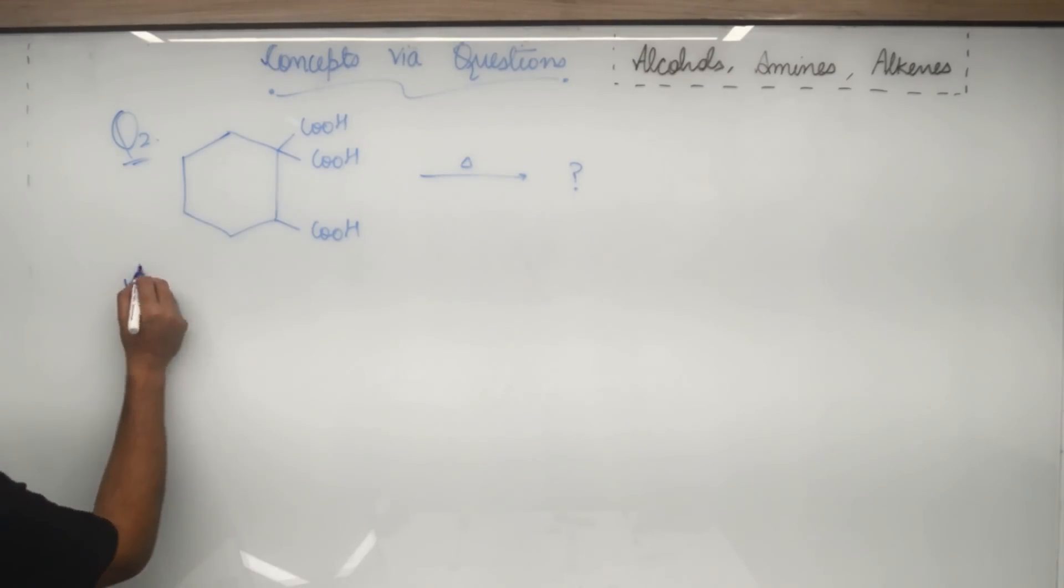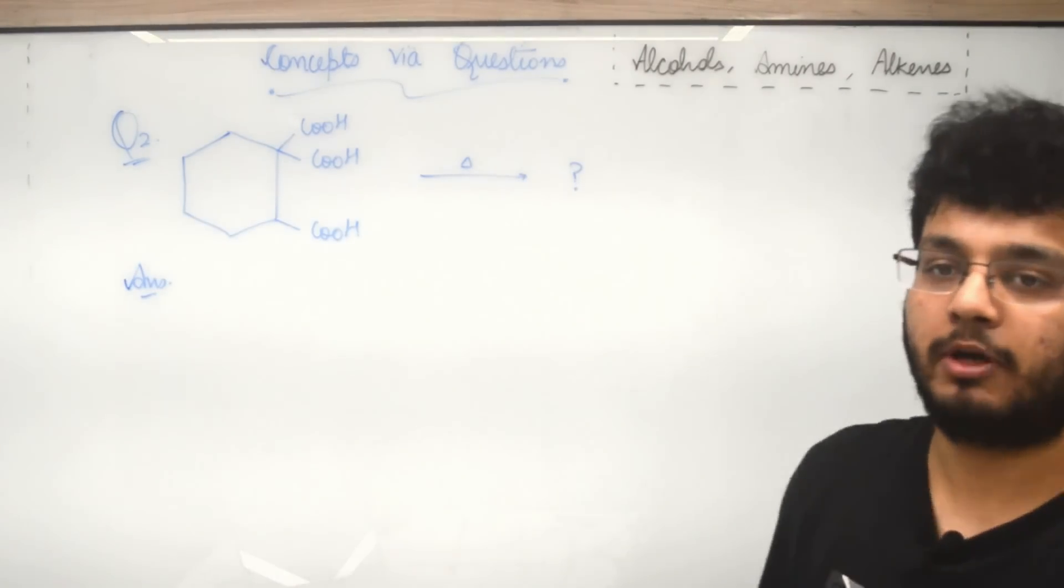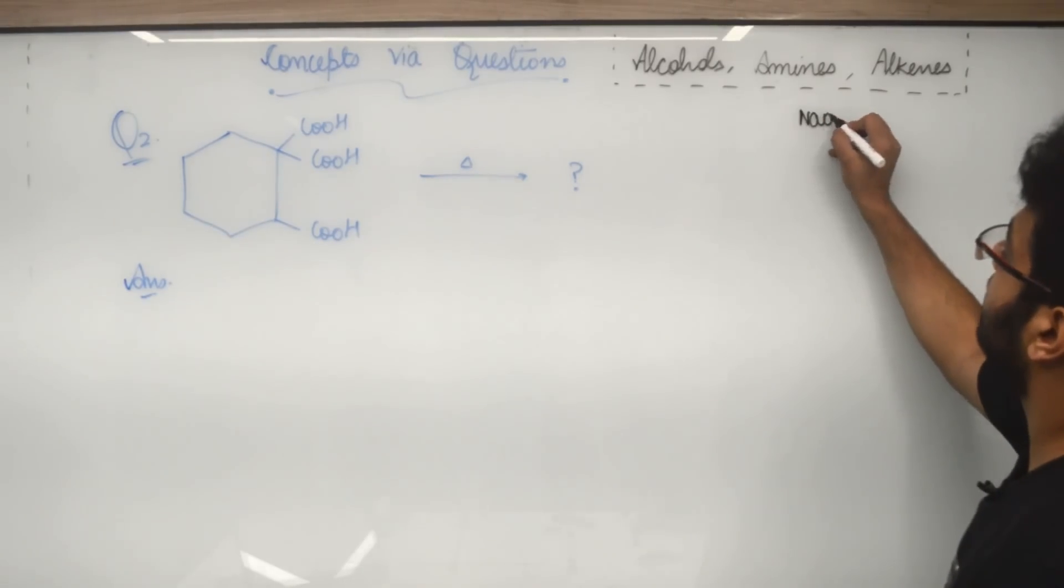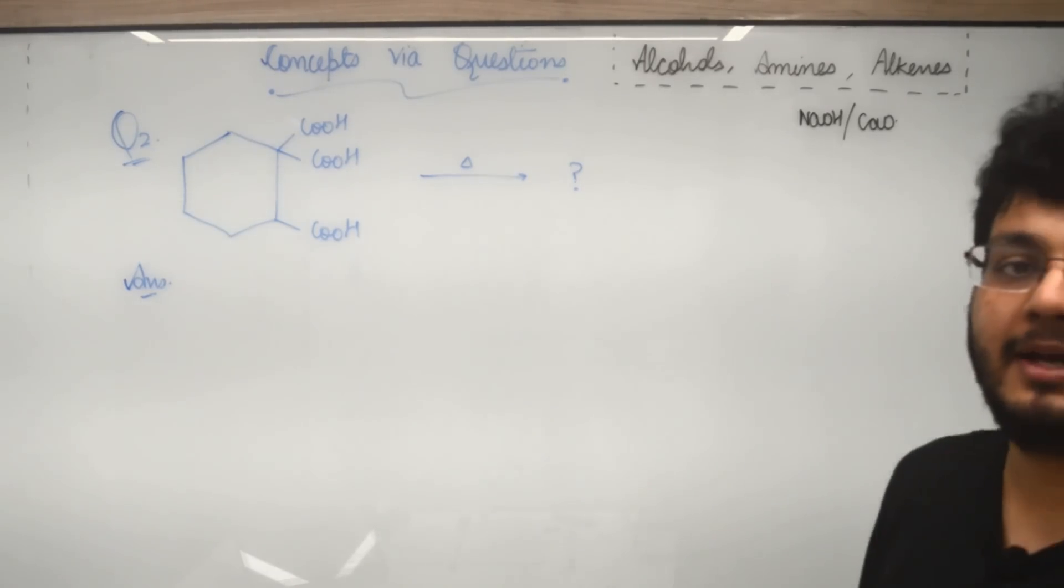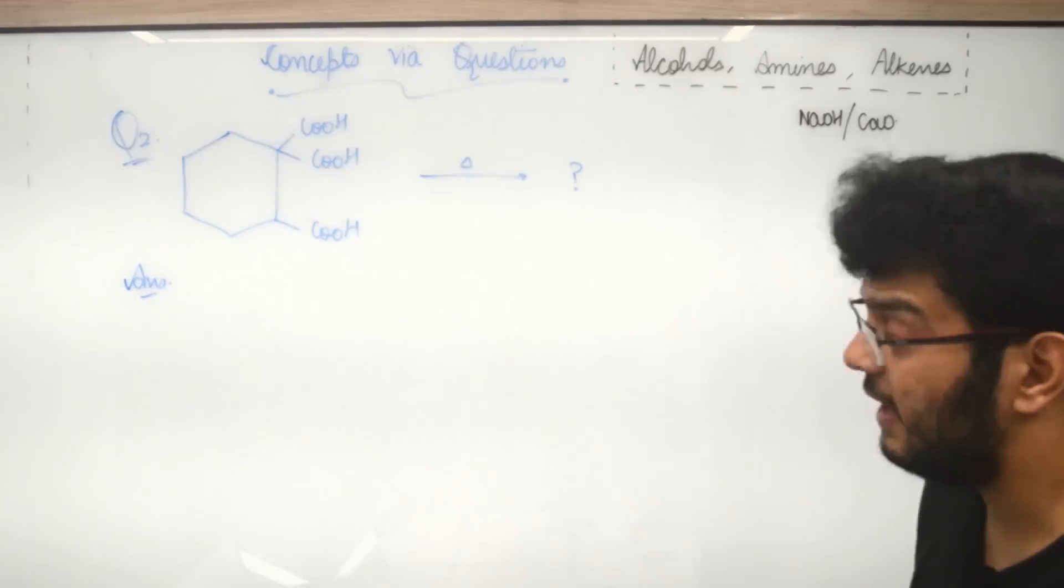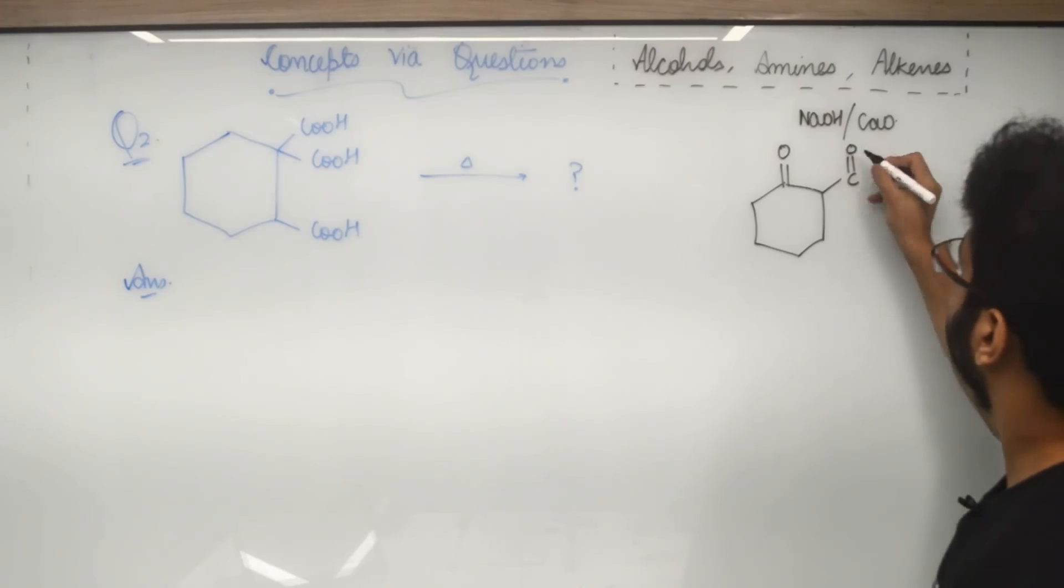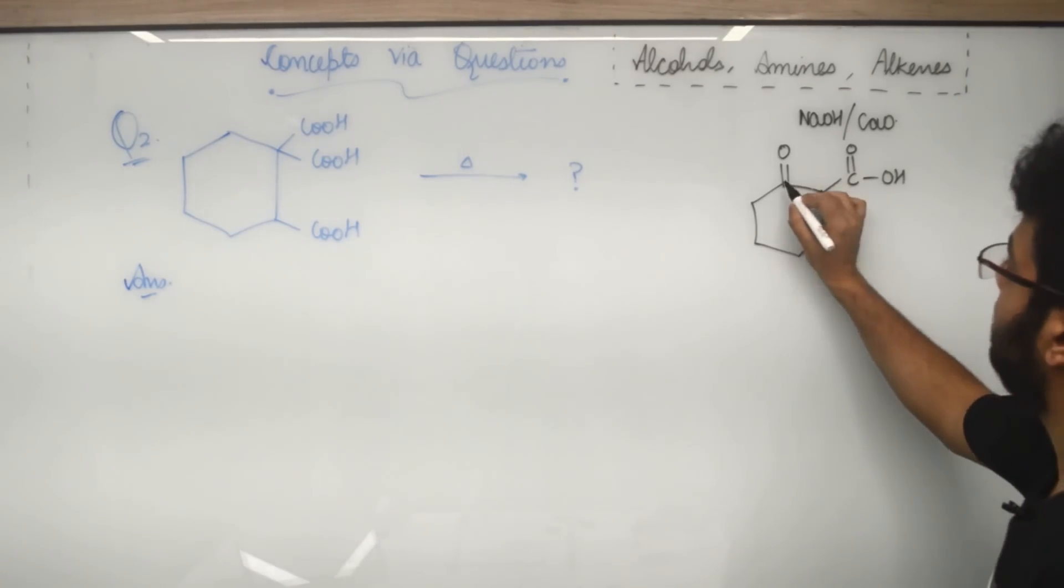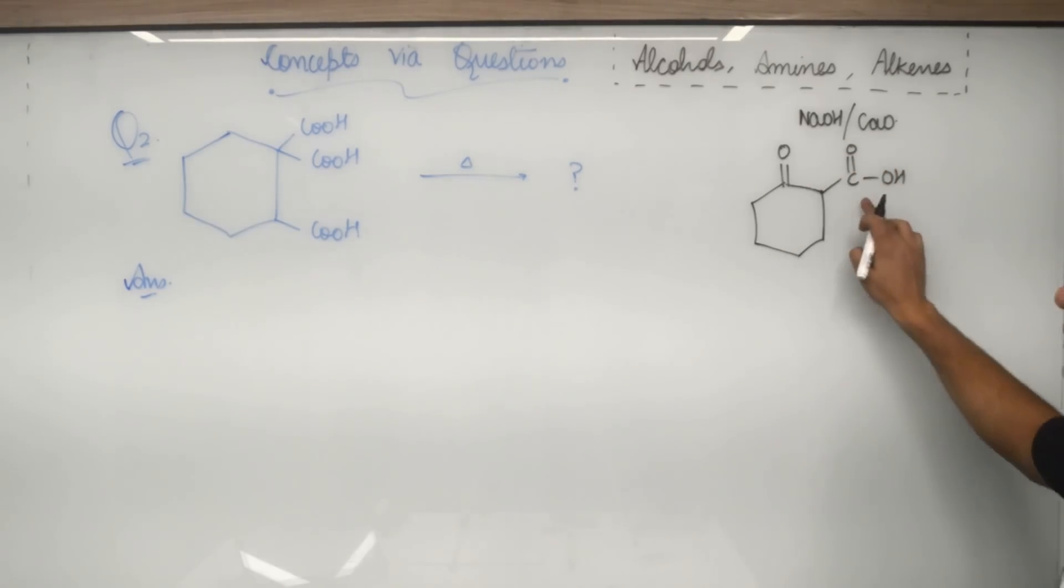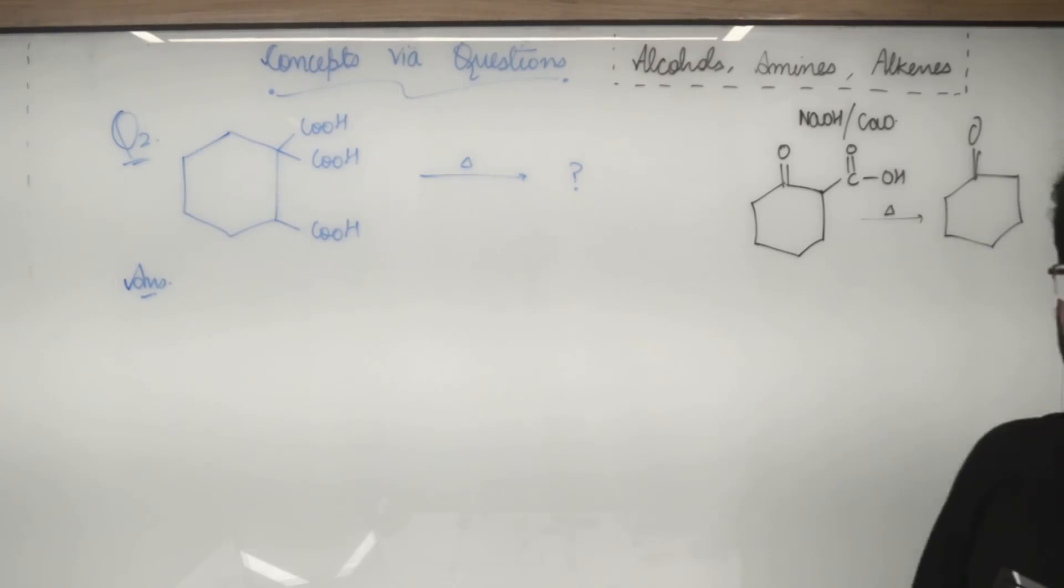Second question here. Let us try to do this question. This is based on decarboxylation. Now in order to understand decarboxylation, a very important point should be known to you. The reagent used is NaOH and CaO in order to decarboxylate. Let us try to understand. First of all, beta-keto-carboxylic acid is this. This is known as beta-keto-carboxylic acid because this is alpha position, beta position. Now what will happen if I heat it? So it decarboxylates on heating to give me this product. Now why does this happen? Let us understand.